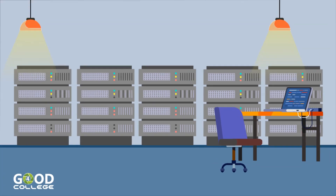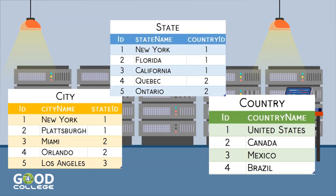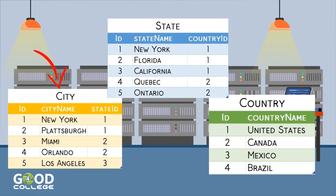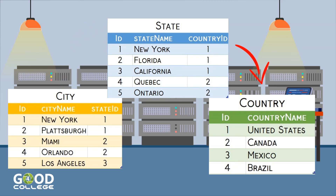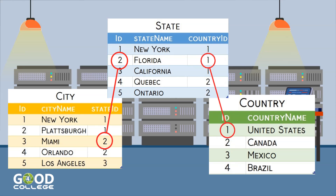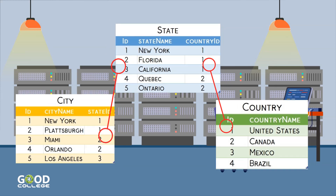In this example, we have three different tables with data. The city table is connected to the state table, while the state table is connected to the country table. We can see that Miami is connected to Florida using the number 2 as the key, while Florida is connected to the United States using the number 1 as the key. More than connecting the tables, these keys help maintain data integrity.